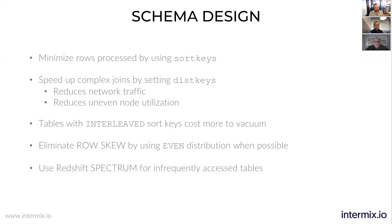You want to eliminate row skew as much as possible unless there's a clear joining benefit. Finally, Spectrum — highly recommended when you're touching tables infrequently. It allows you to make a dataset in S3 look like a Redshift relational table so you can access it just like any other table in Redshift without having to copy the data in. Highly recommend using Spectrum for tables that are not accessed frequently.